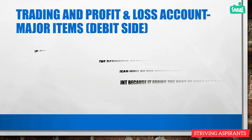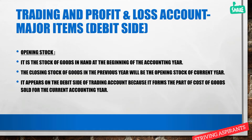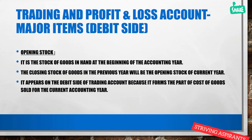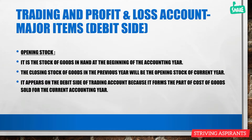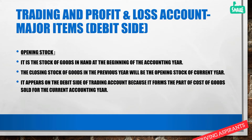Now let us check the major items on the debit side of the trading and profit and loss account. First is opening stock — this is the stock or goods the business has at the beginning of an accounting year. Whatever closing stock existed in the previous year becomes the opening stock of the current year. Opening stock is part of the cost of goods sold and appears on the debit side of the trading account.